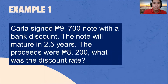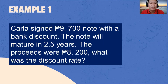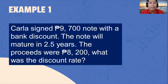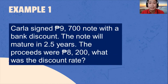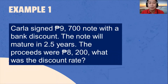Let's now try to solve an example. Example number one: Carla signed a 9,700 pesos note with a bank discount. The note will mature in 2.5 years. The proceeds were 8,200 pesos. What was the discount rate?